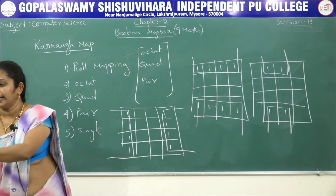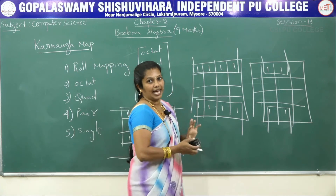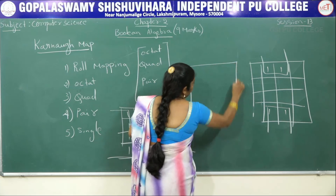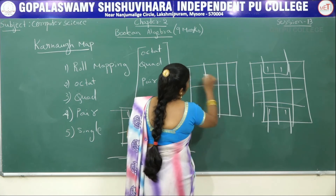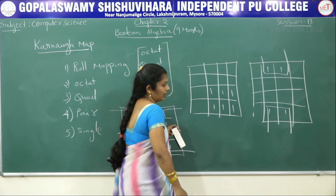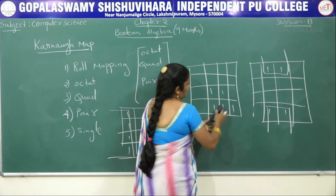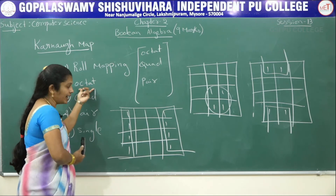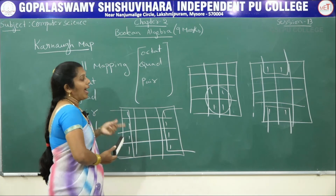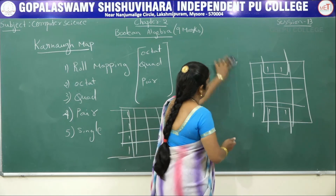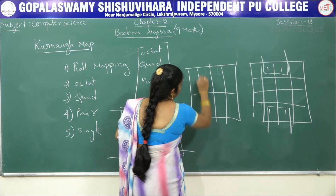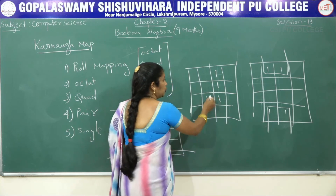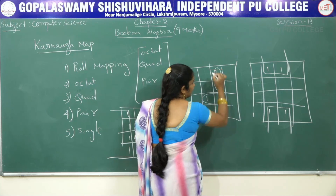What do you mean by octate or quad? In quad, 4 adjacent positions have to be combined. For example, consider a K-map where adjacent four 1s are matching or combining — then we can say it is quad. Octate means 8 cells have to be combined; quad means 4 cells have to be combined. And pair — for example, if here I am having 1 and here also I am having 1, then two adjacent 1s circled together can be called a pair.